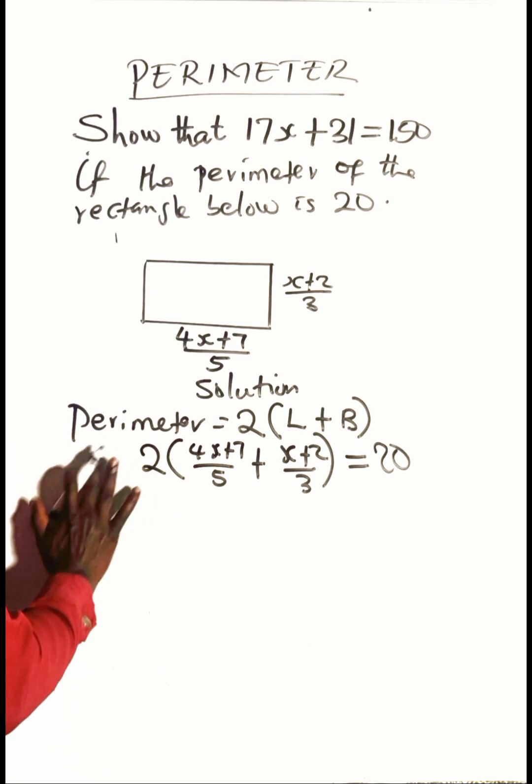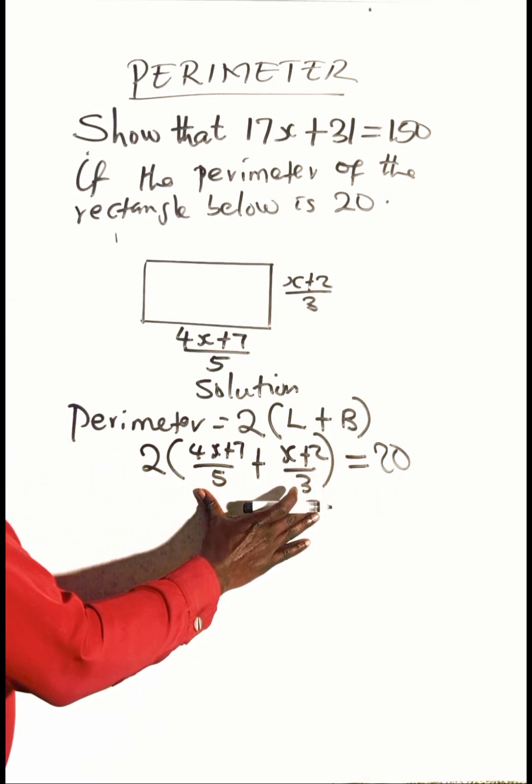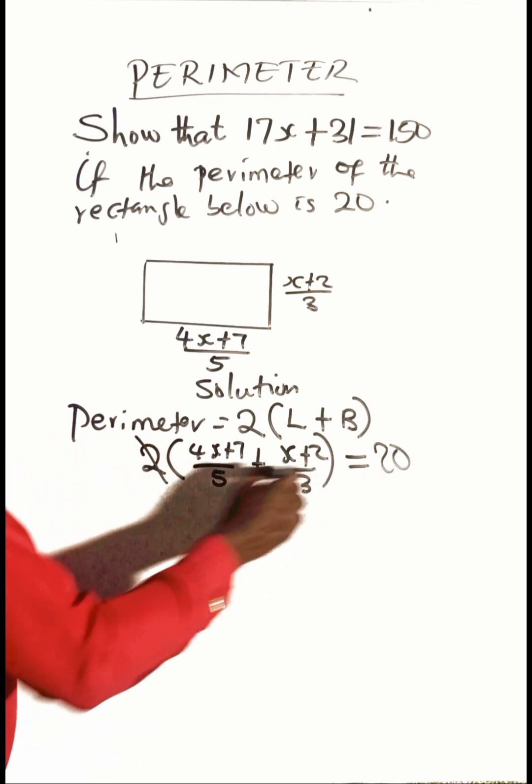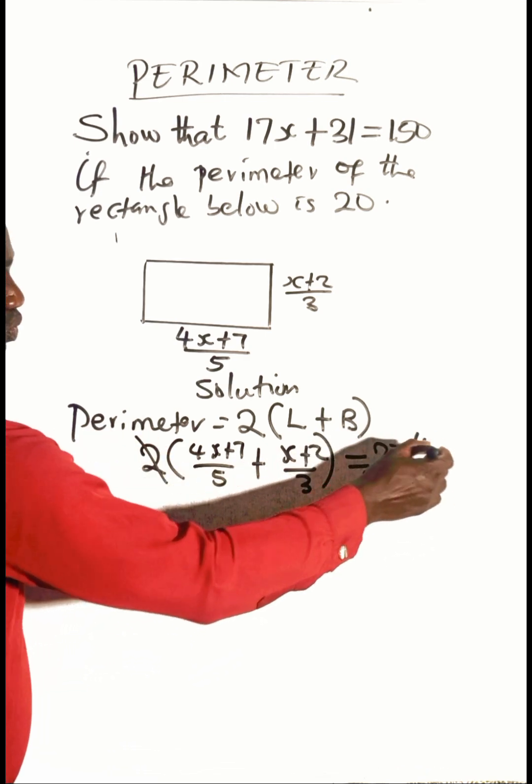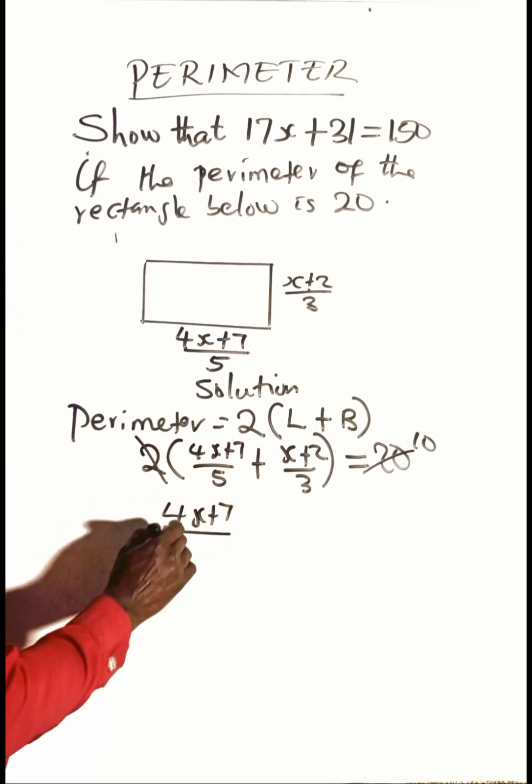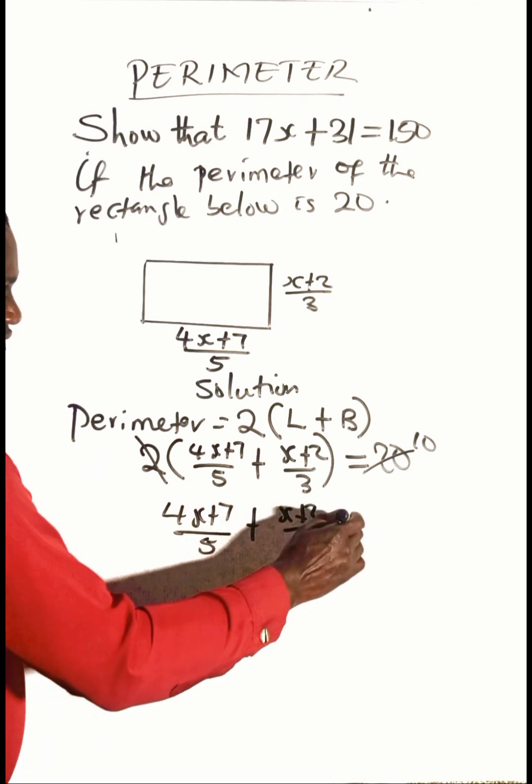Let's remove this equality sign here and solve this. To make this work easier, let's divide both sides by 2, so we have 10 here. So we have 4x plus 7 over 5 plus x plus 2 over 3 is equal to 10.